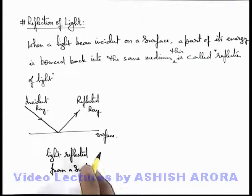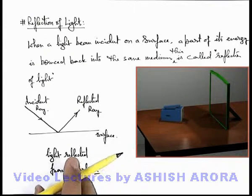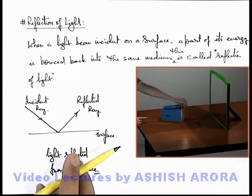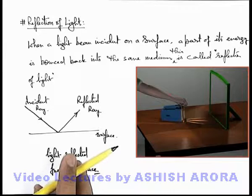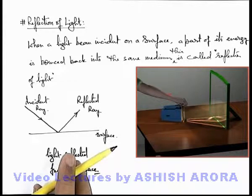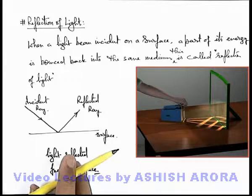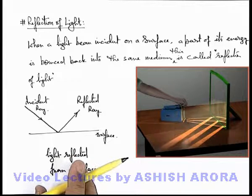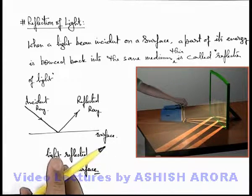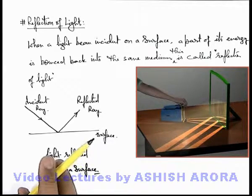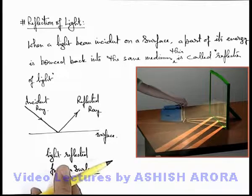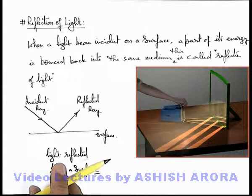A very common activity: in front of a torch we place a cardboard with a few slits. When the torch is lit, light beams are produced from these slits. When these beams are incident on a mirror placed in front of the slit plane, the light beams are reflected in the direction opposite to the side from which the incident rays are coming. These are the incident rays and these are the reflected rays — the reflected light from the mirror. This phenomenon is called reflection of light.